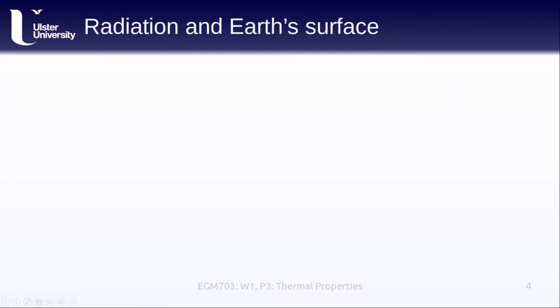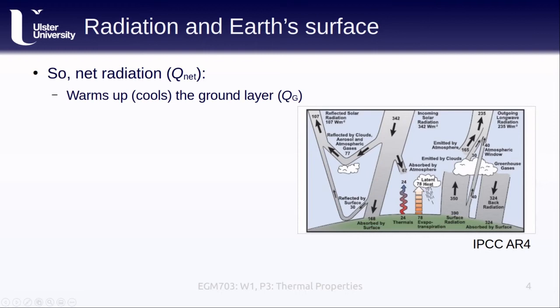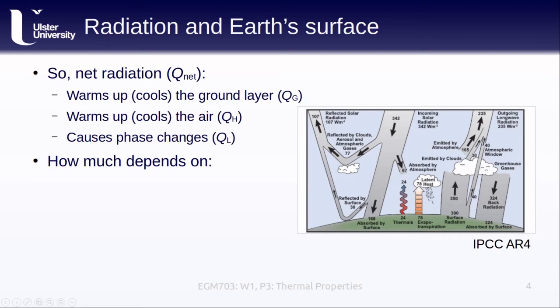What this tells us is that the net radiation warms up if the net radiation is positive or cools if the net radiation is negative, the ground layer, in the form of the ground heat flux. It also warms up or cools the air in the form of the sensible heat flux, and it can cause phase changes in the form of the latent heat flux, for example, through melting snow and ice, evaporating water, or condensing water vapor. How much it does this depends on the atmospheric conditions for the sensible heat flux, as well as the surface properties, like the albedo, the absorptance of the surface material, the emissivity of the surface material, or the temperature of the surface, as well as the different material properties.